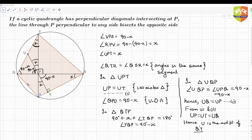This holds true for any side — so if you draw a perpendicular to any side through P, it will bisect the opposite side at the midpoint. We constructed the diagram and proved the theorem. I hope you understood this theorem and its proof. Thanks for watching, bye-bye, see you in the next video.